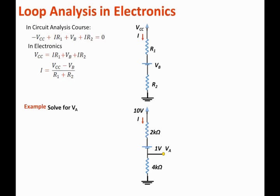So we will use the loop equation technique to solve for I. The loop equation will start at the top, that is VCC, which will equal the voltage drop across the 2kΩ resistor, plus the voltage drop across the 1V voltage source, plus the voltage drop across the 4kΩ resistor. Visualizing the voltage drop through the loop is crucial in solving electronic circuits.